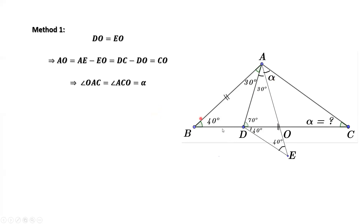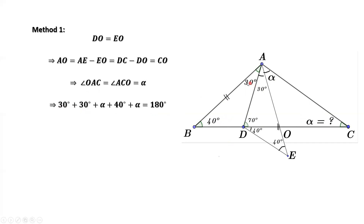In summary, we know this angle equals 30 degrees plus 30 degrees plus alpha. This angle is alpha, and this angle is 40. The total sum of three angles equals 180. Adding up: 30 plus 30 plus alpha for this angle, 40 for this angle, and alpha for this angle.